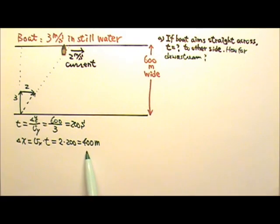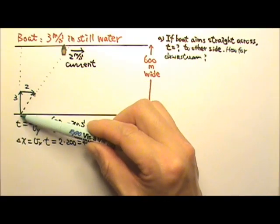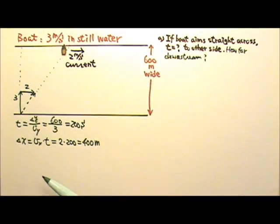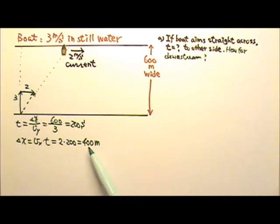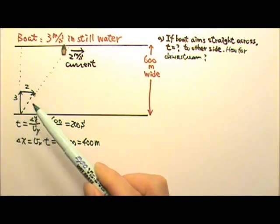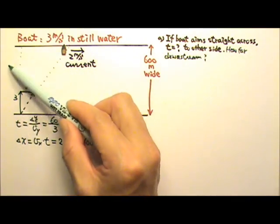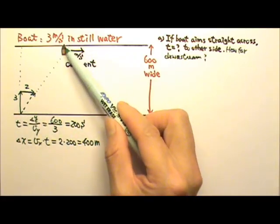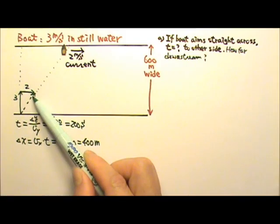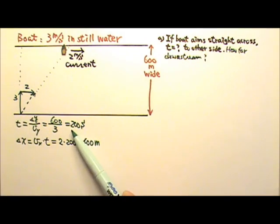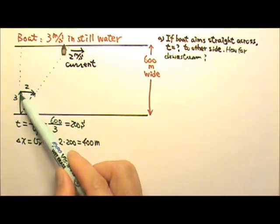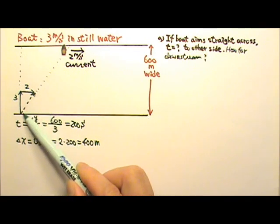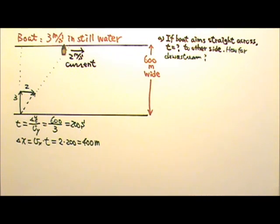We don't have to use that method because we have similar triangles. The two triangles are similar, meaning 600 to 3 equals delta x to 2, which gives exactly the same answer. In fact, the slanted distance divided by the slanted velocity also equals 600 divided by 3 — all of these give you 200 seconds.